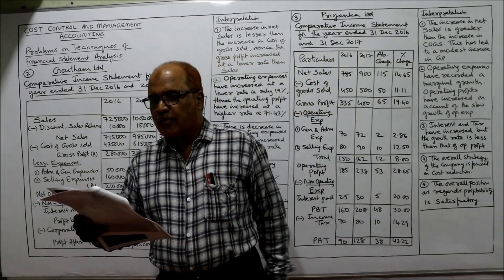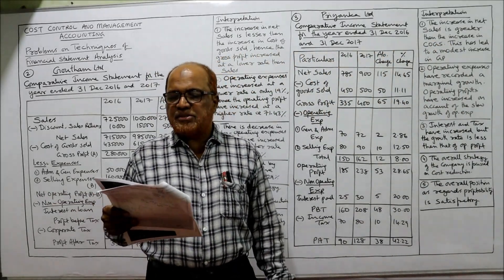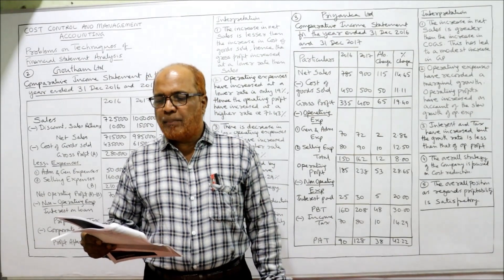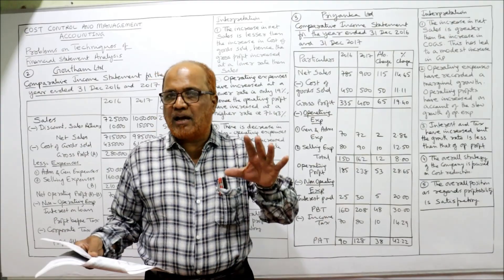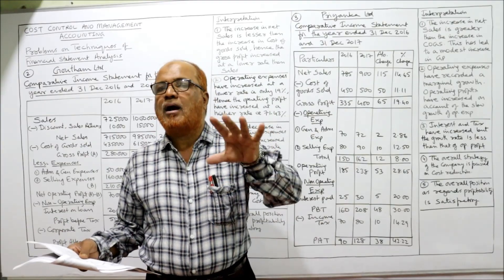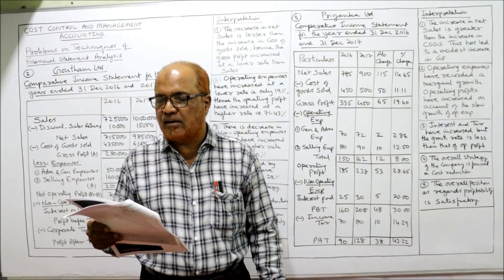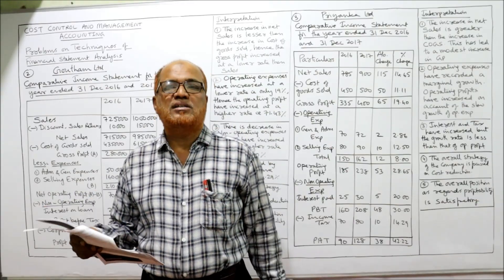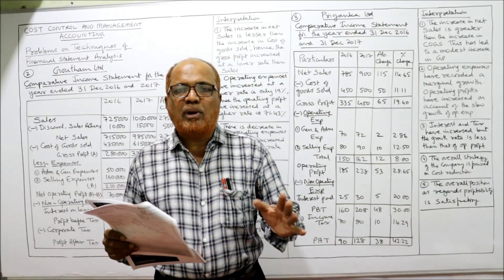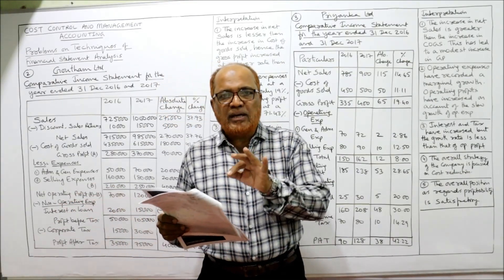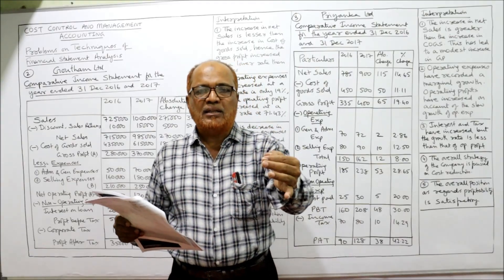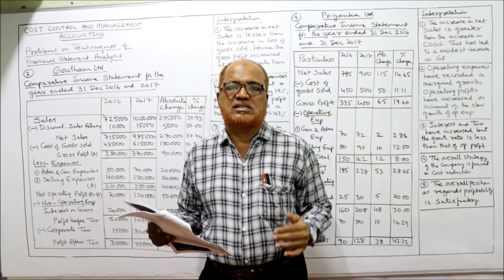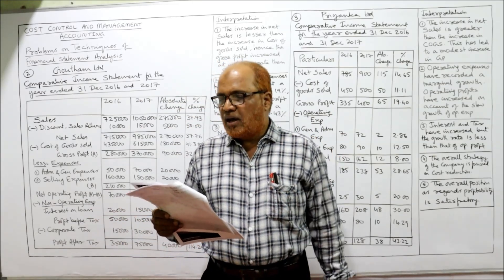Now see the second problem. Problem number two: the income statement of Gautam Limited is given for the year 2016 and 2017 — prepare a comparative statement. When an income statement is given, we prepare a comparative income statement. The problem also asks us to analyze and interpret the significance of changes in the statement.